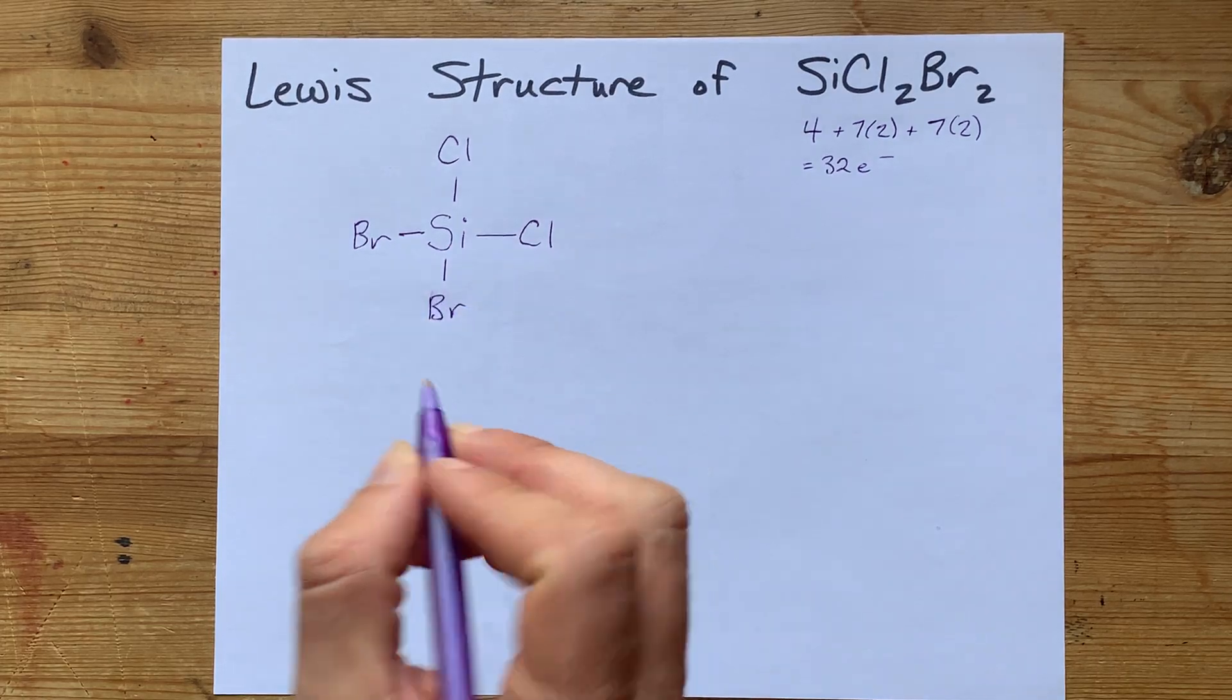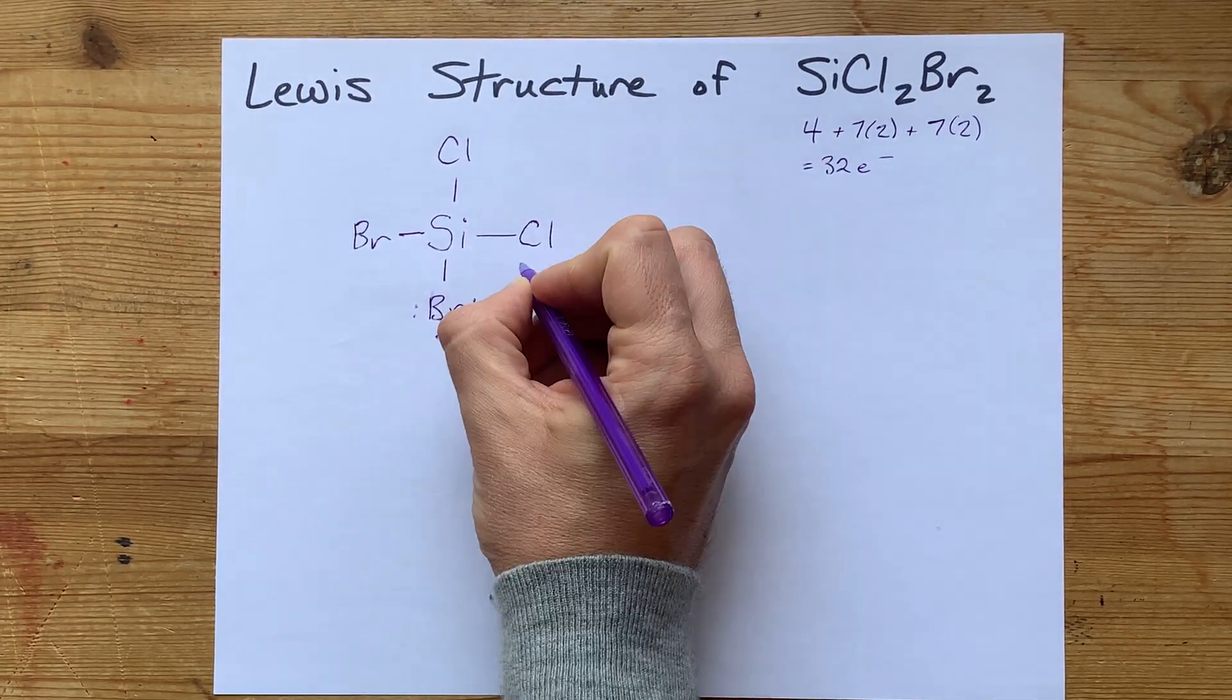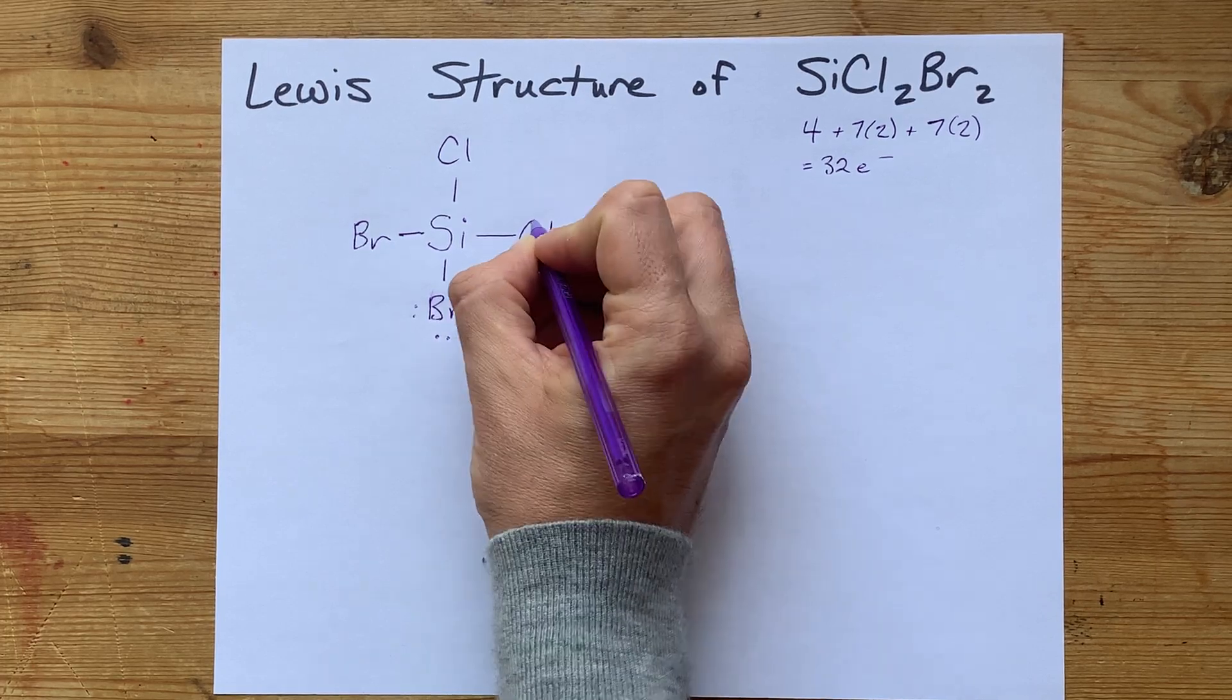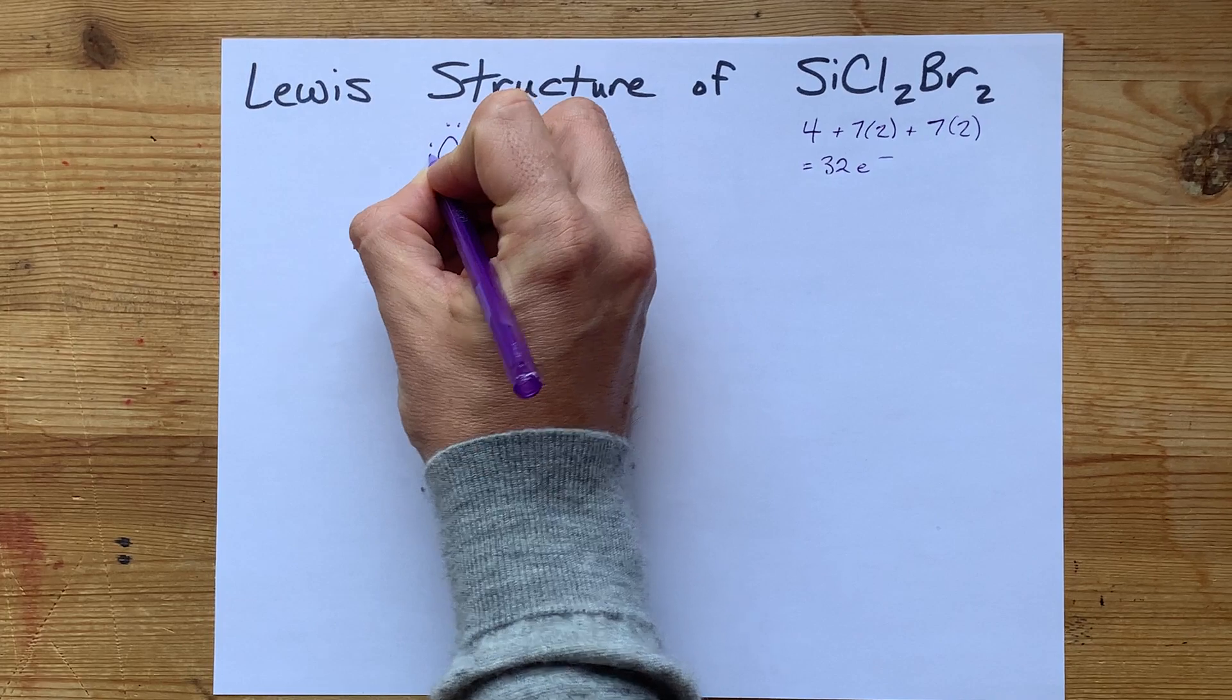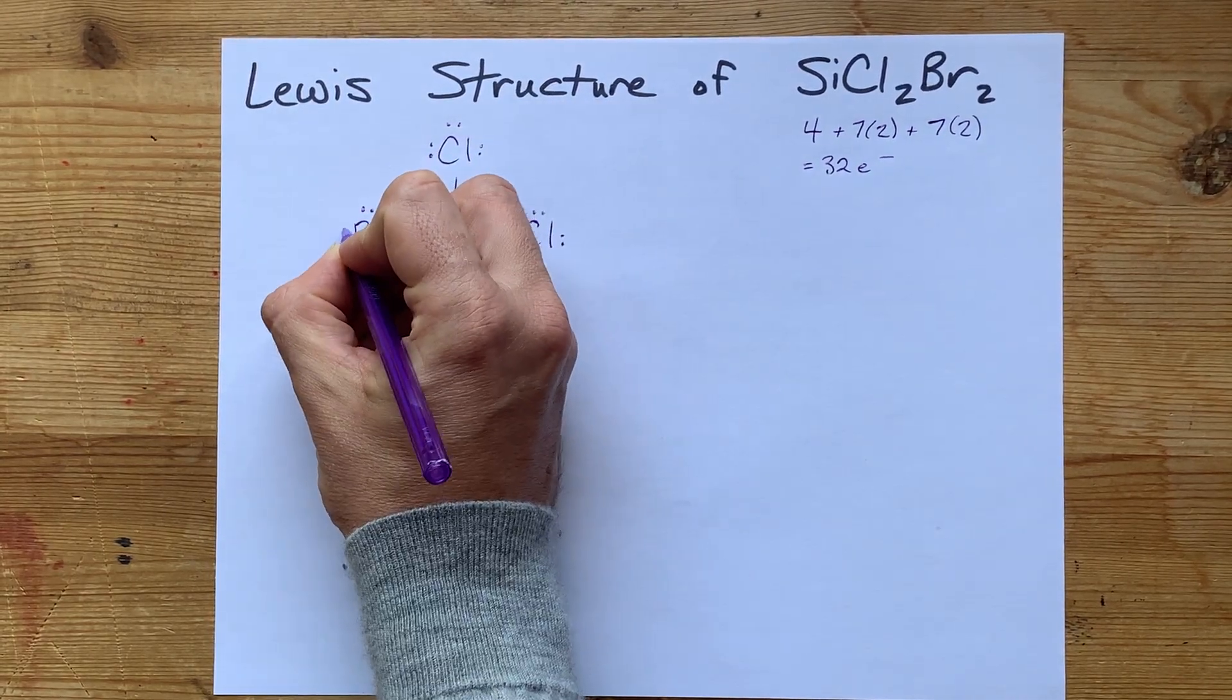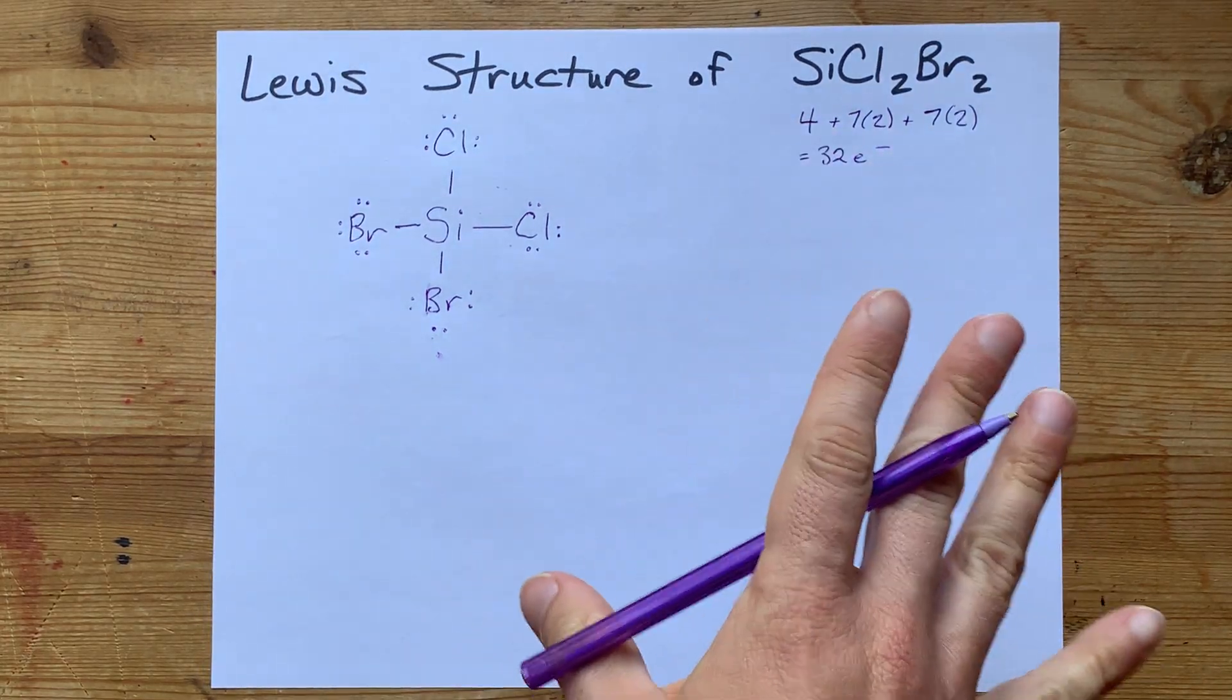I'm just going to start adding lone pairs until I get up to 32 electrons. Counting: 2, 4, 6, 8, 10, 12, 14, 16, 18, 20, 22, 24, 26, 28, 30, 32. Okay, I'm at 32, so I've got to stop.